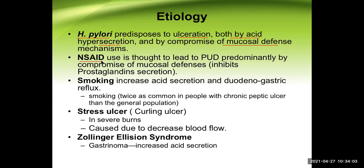Smoking increases acid secretion and duodenogastric reflux; the incidence of peptic ulcer disease is twice as high in smokers as in the general population. Stress ulcers associated with burns are called Curling ulcers, and they are associated with decreased mucosal blood flow. Another type of stress ulcer associated with raised intracranial pressure from intracranial infection or lesion is called Cushing ulcer.